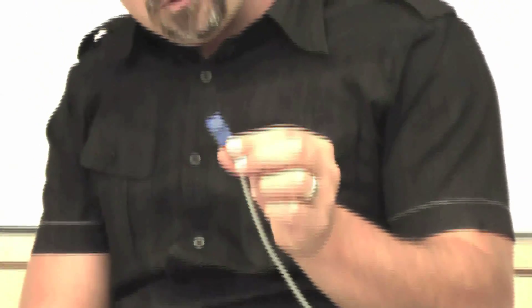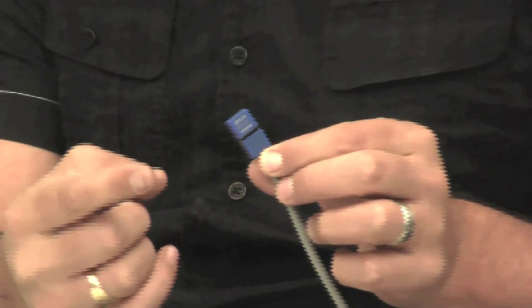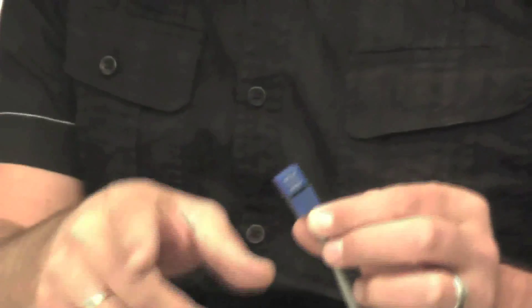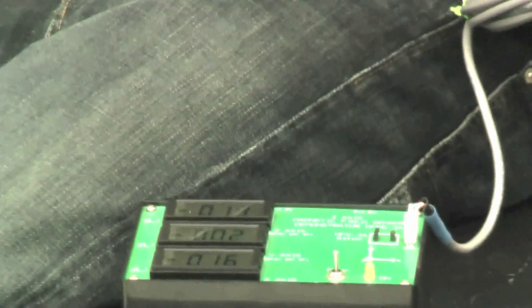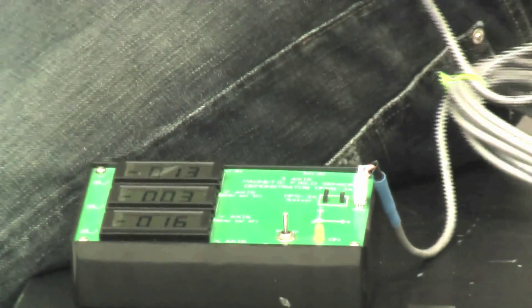I have here, it's actually three Hall chips in one. There's a Hall chip for the X direction, a Hall chip for the Y direction, and a Hall chip for the Z direction. So there's three Hall chips in this guy. Turn it on, and you see over here, I'm just measuring the Earth's magnetic field.